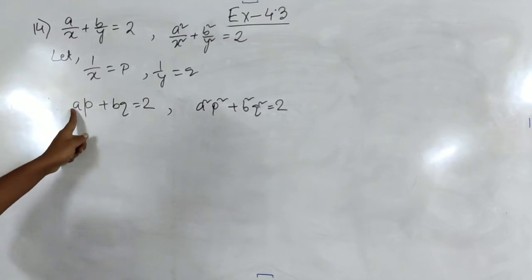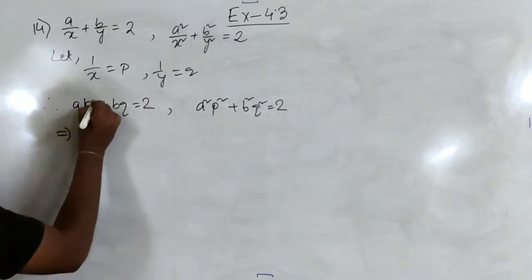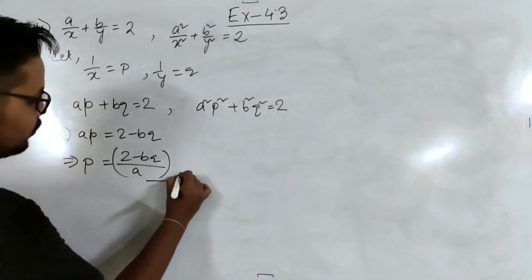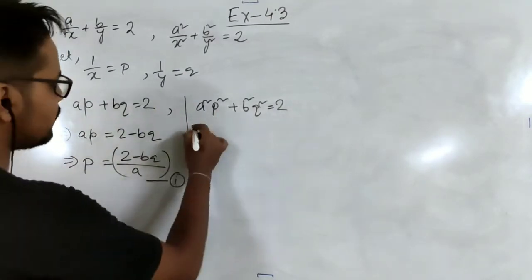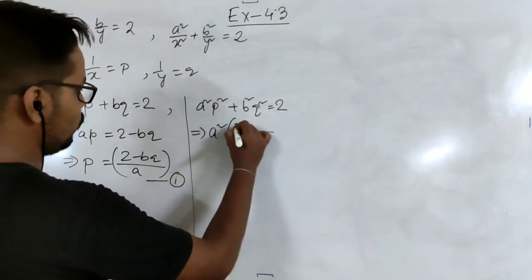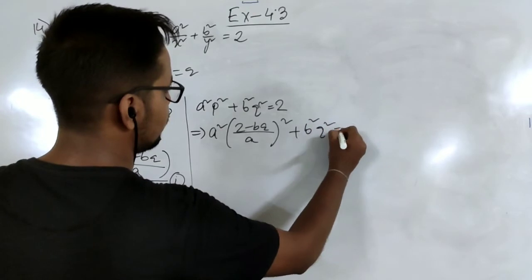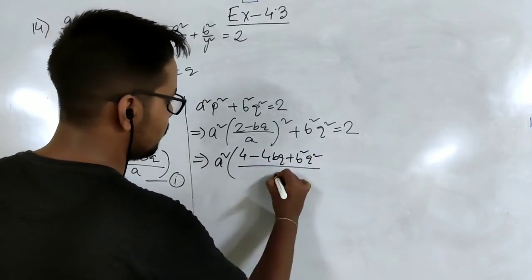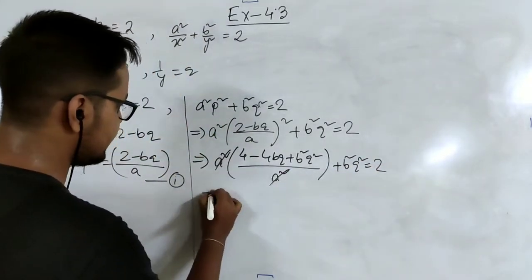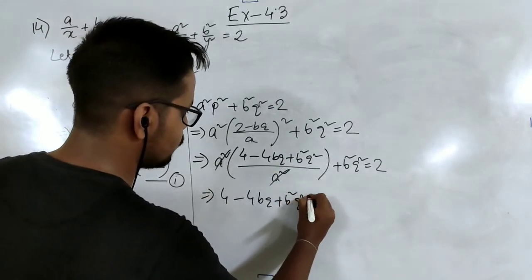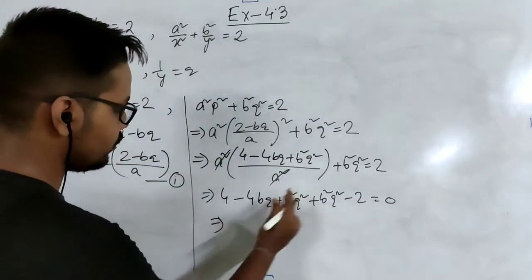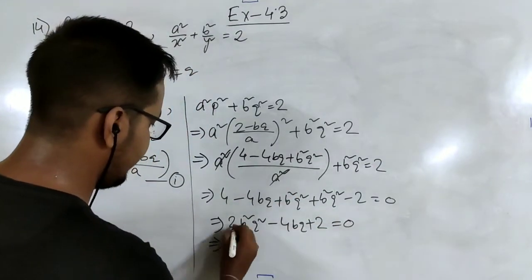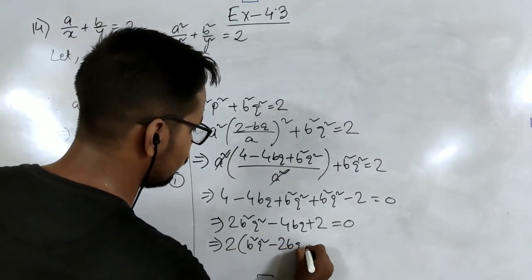From the linear equation, ap equal to 2 minus bq, so p equals (2 minus bq) by a — this is equation 1. Substituting into a²p² plus b²q² equal to 1: expanding gives a² times (2 minus bq)² by a² plus b²q² equal to 1, which simplifies to 4 minus 4bq plus b²q² plus b²q² equal to 1, giving 2b²q² minus 4bq plus 2 equal to 0. Taking 2 as common: b²q² minus 2bq plus 1 equal to 0.